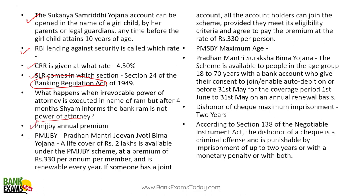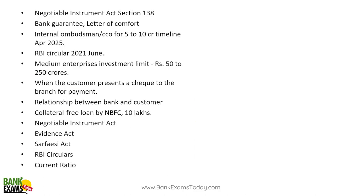Jeevan Jyoti Bima Yojana — annual premium and cover — two questions. Pradhan Mantri Suraksha Bima Yojana — again two questions — maximum age and cover amount. Dishonor of the check — Negotiable Instrument Act question — two questions. So you can see a lot of questions from Negotiable Instruments Act. Banking Regulation Act questions also coming. Bank guarantee, types of guarantee — a very important topic. Ombudsman scheme — RBI circular — questions from one or two years old circulars come. Medium enterprise definition — this was changed last year.